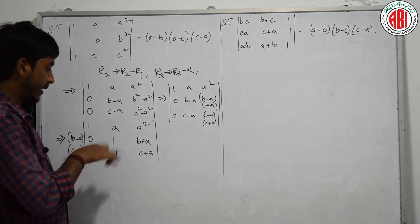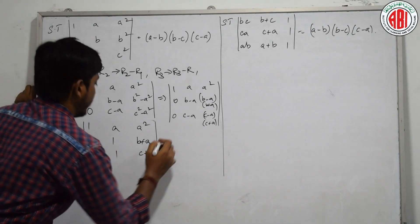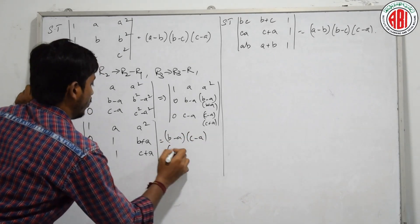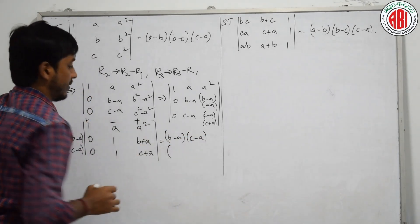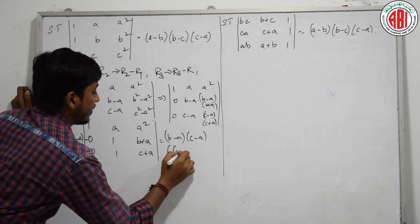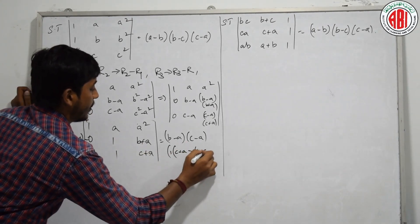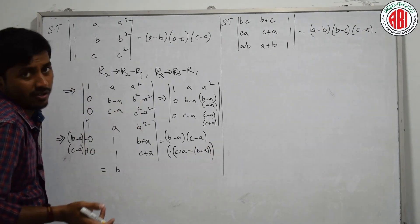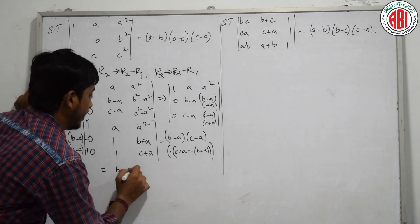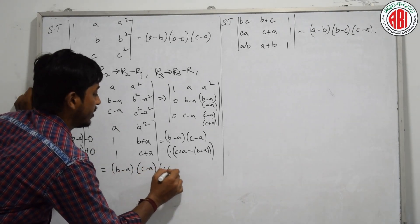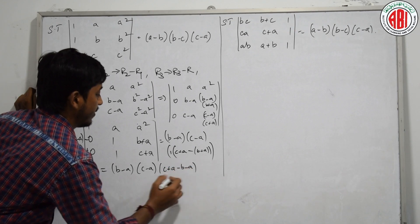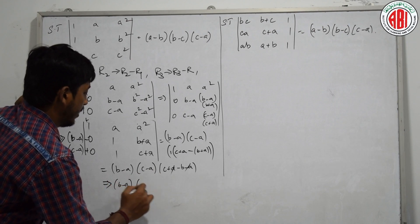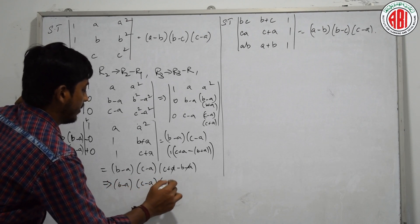Now, can I directly find the determinant? It is very simple to solve. This equals (B minus A)(C minus A) into, expanding plus, minus, plus: 1 into (C plus A minus B plus A). So we get (B minus A)(C minus A)(C minus B). The A's get cancelled.